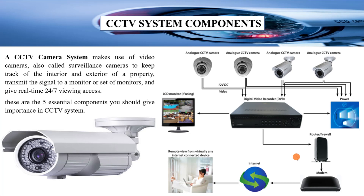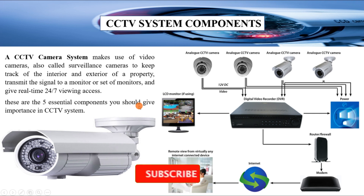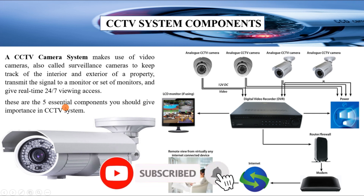A CCTV camera system makes use of video cameras, also called surveillance cameras, to keep track of the interior and exterior of a property, transmit the signal to a set of monitors, and give real-time 24/7 viewing access. These are the five essential components you should give importance to when choosing your CCTV system.